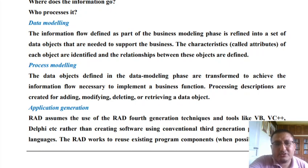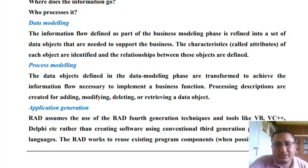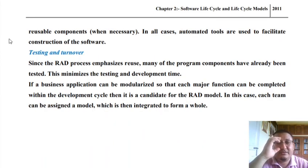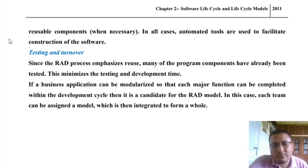In Application Generation, to save time, Rapid Application Development heavily relies on the use of fourth generation languages instead of third generation languages like C, C++, and so on. It relies on frameworks like VB.NET and so on. Using fourth generation languages helps save time, which is the overall objective of RAD. Once the application has been generated, we test the system. In the Testing and Turnover phase, the total testing time is considerably reduced because RAD heavily relies on reusability of components that have already been tested.